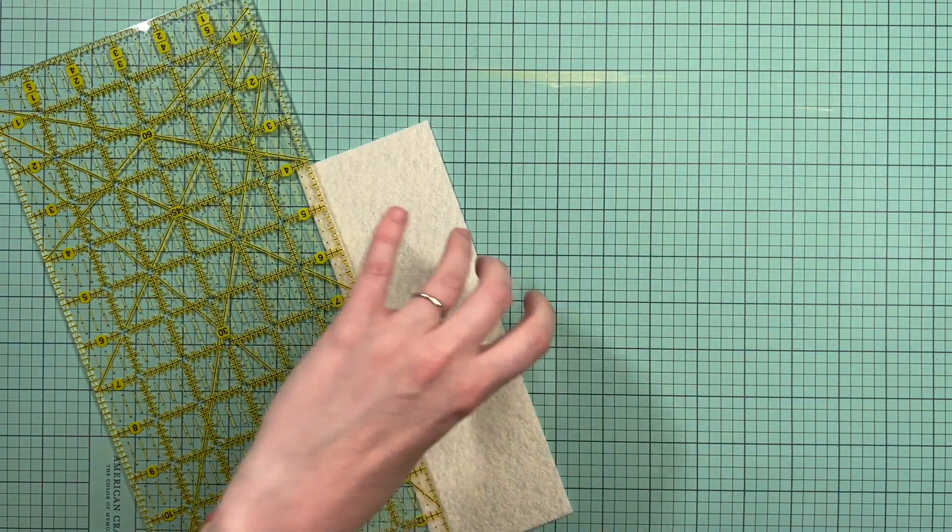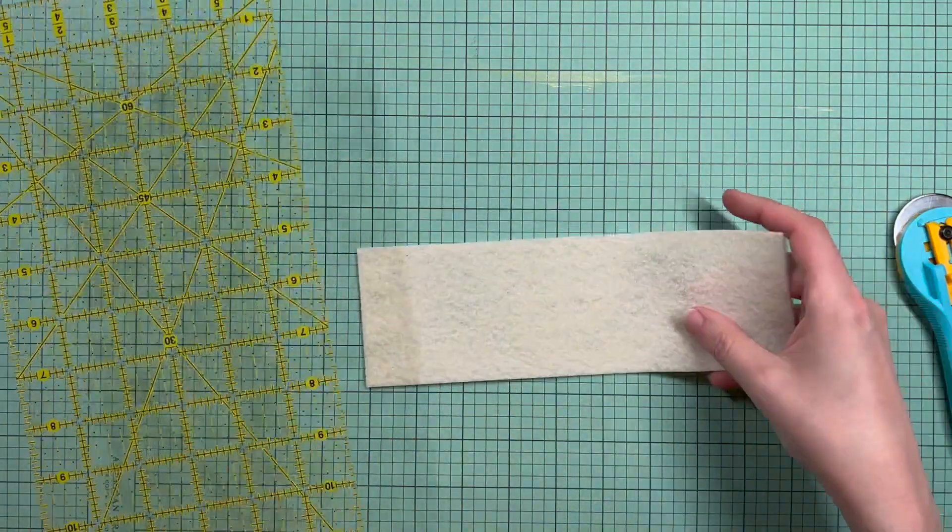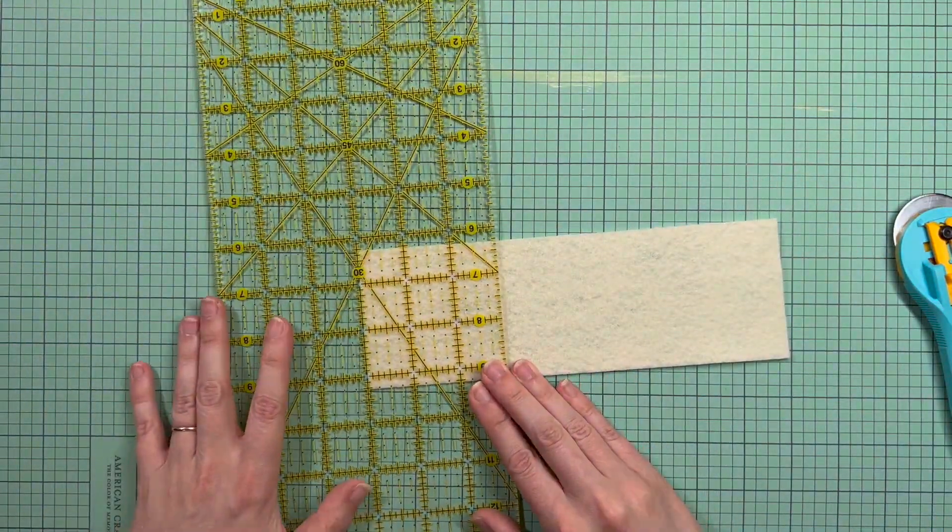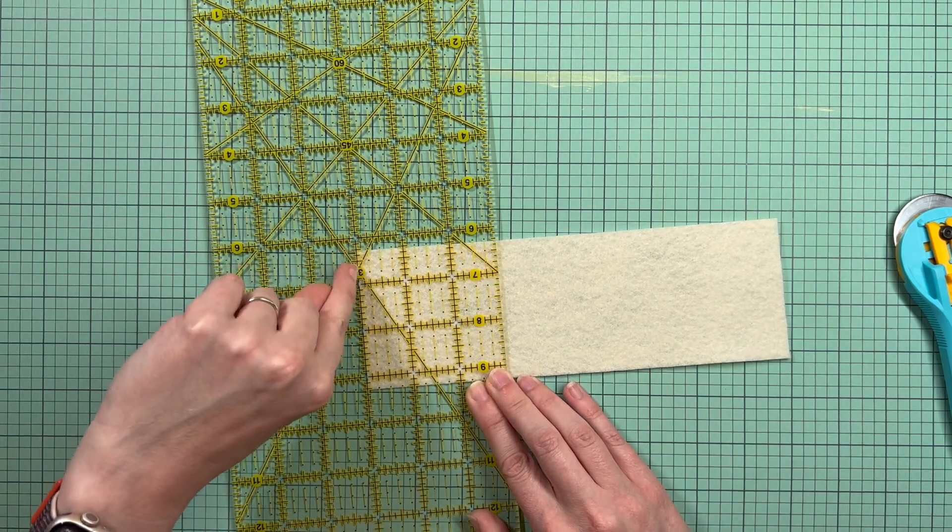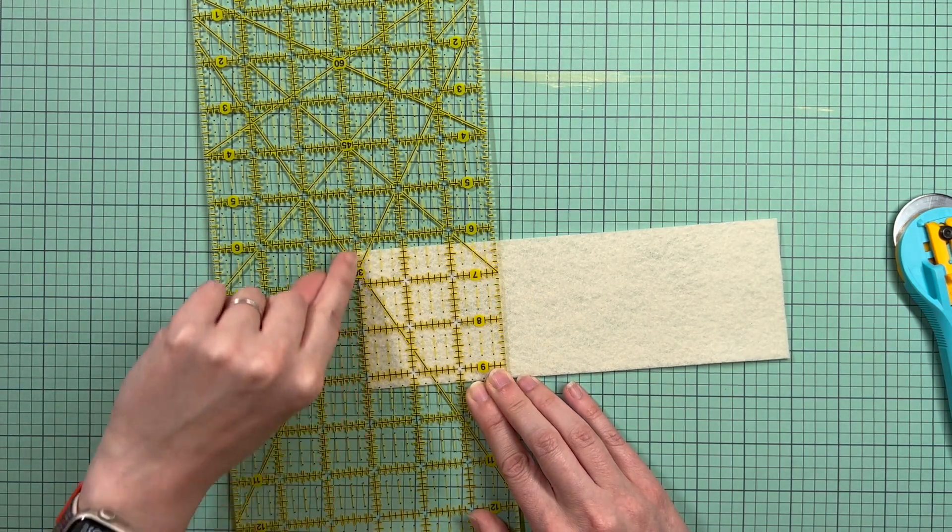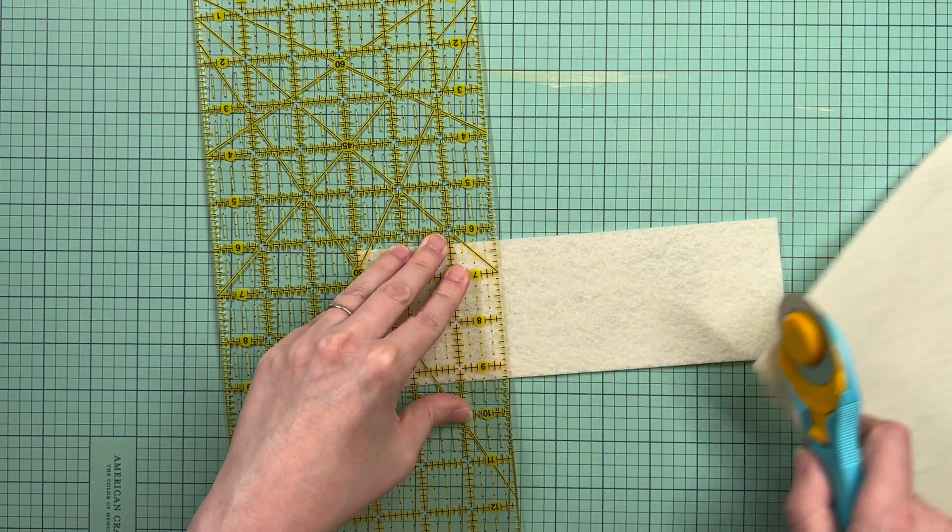Okay, there's my strip. And then I'm going to cut this into three inches again. And so you can see here that I'm lining the edge of my felt up with this three inch line here. And then I just cut along this edge with the rotary cutter.